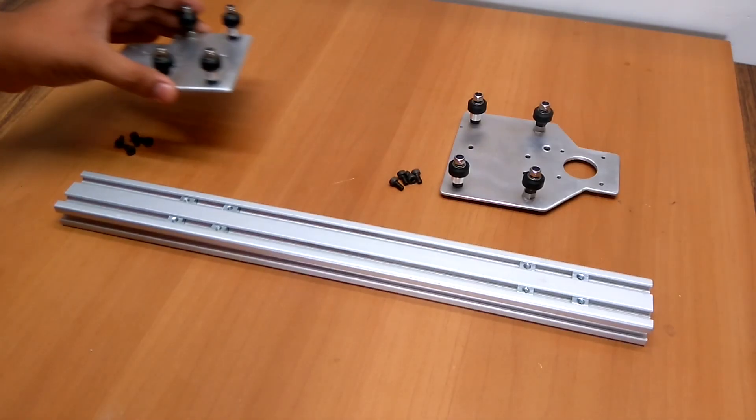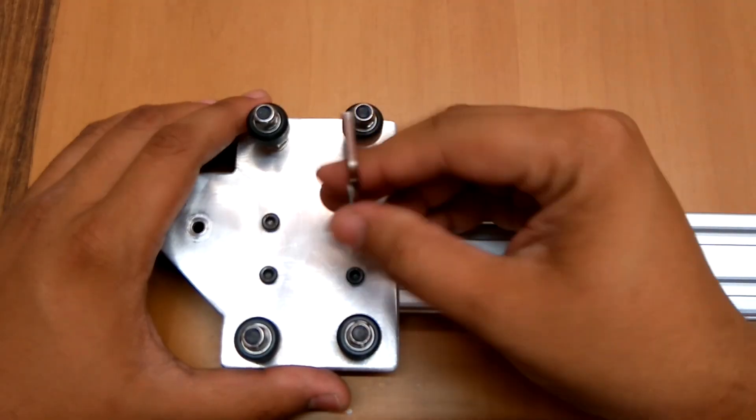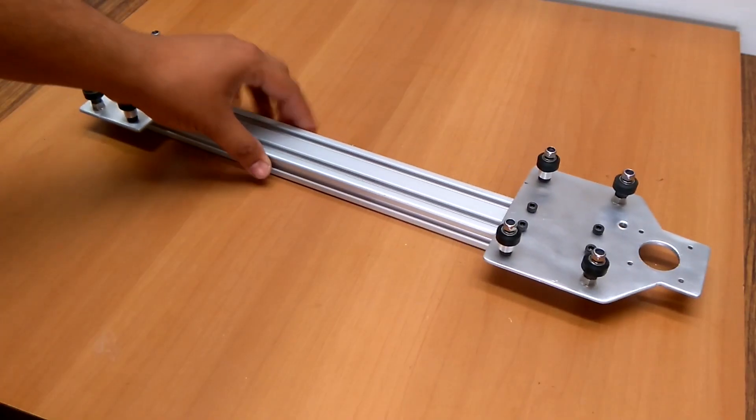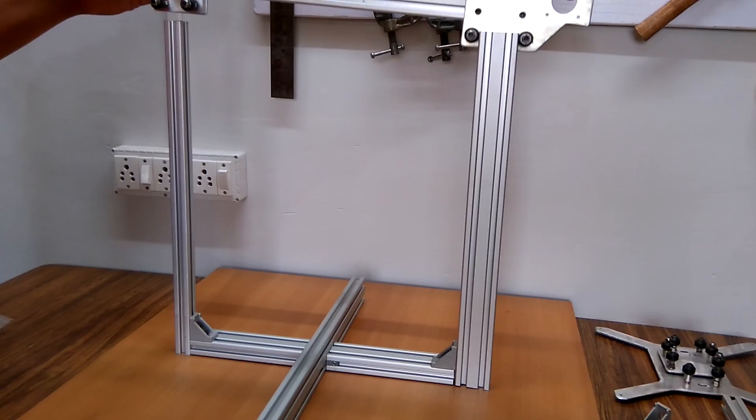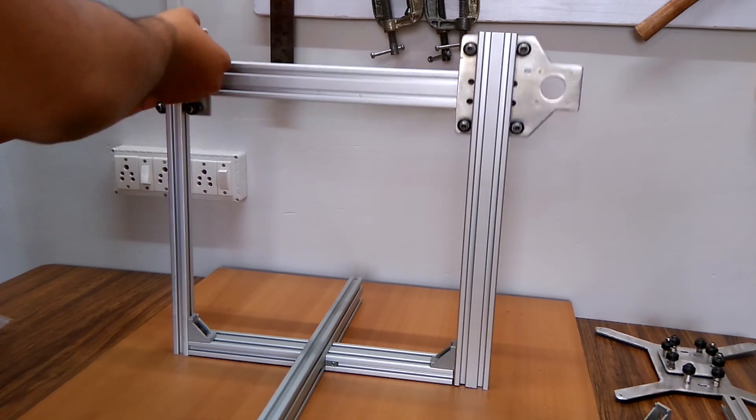The Z axis gantry are mounted to the 400mm 2540 extrusion in this manner using sliding nut clips and 4mm bolts. Once it was ready, I placed it on the frame in this way.